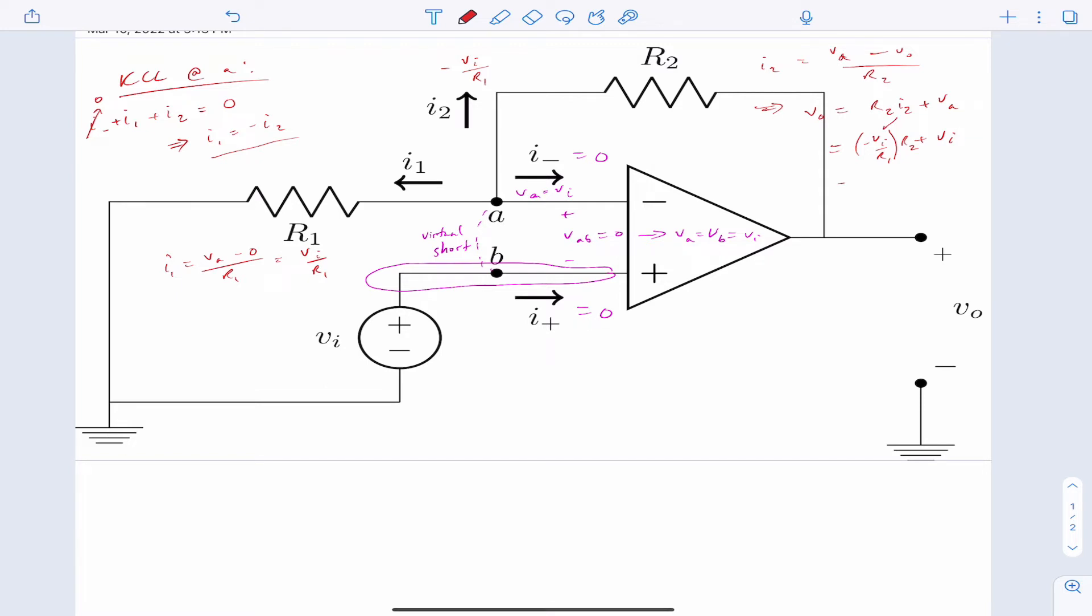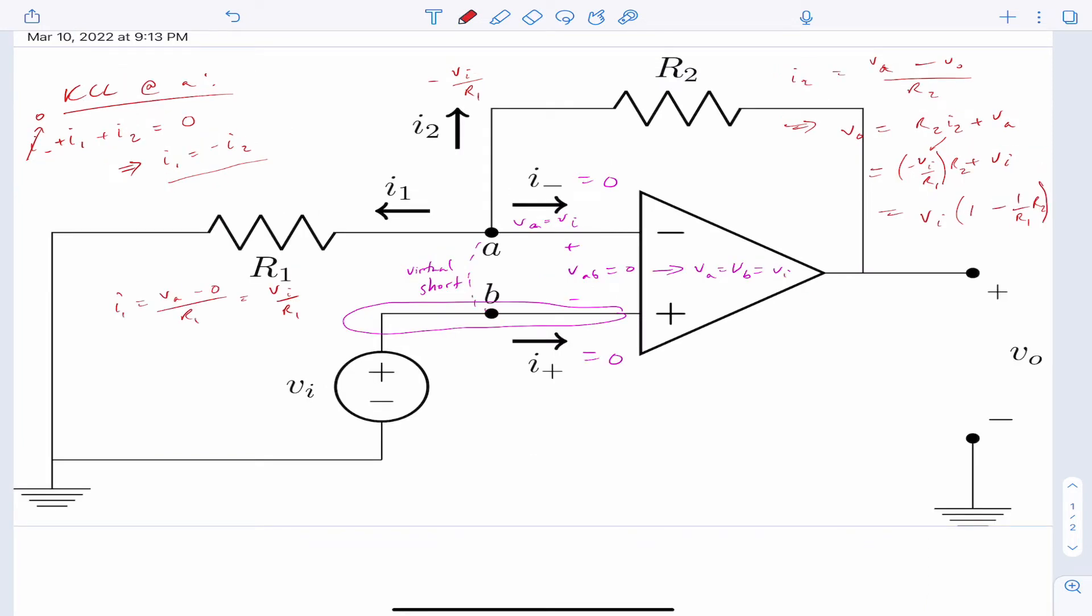Now we can write this... And we can write it like this. So all I've done is I factored out the VI. And actually, I made a sign error. So we're going to fix it.